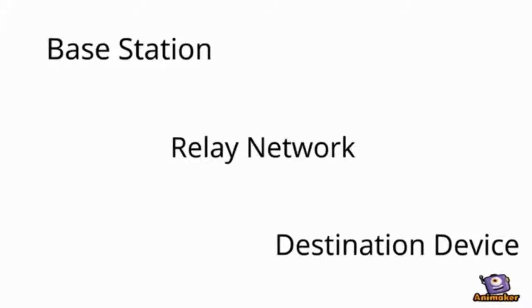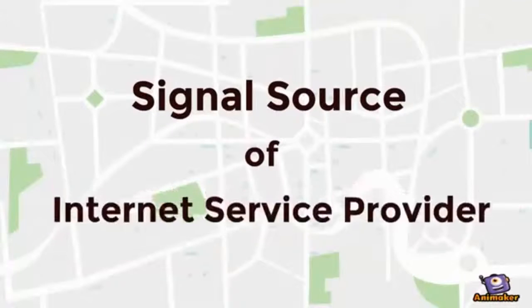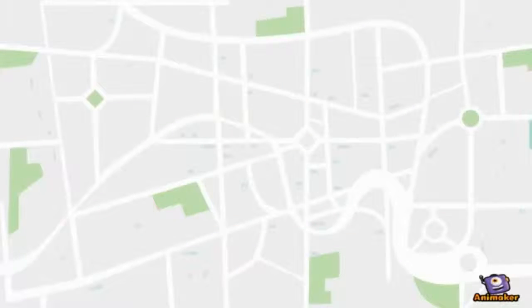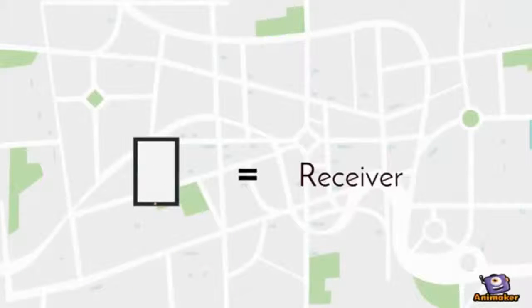Base station can be simply classified as a signal source of internet services provider to their customer. On the other hand we have the destination device, which can be treated as a receiver.